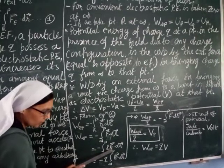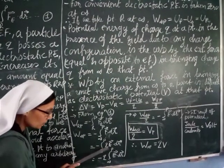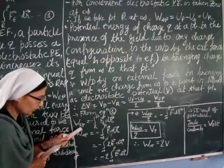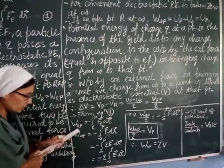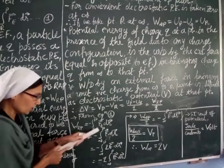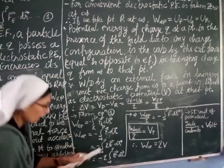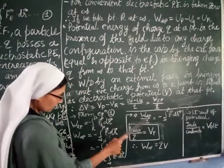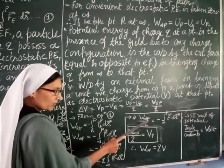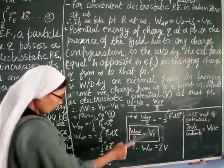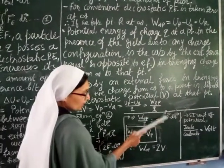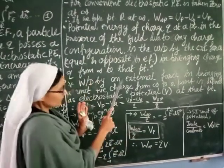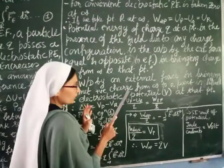Taking R as infinity for convenience, and transferring Q to the other side: the work done in bringing Q from infinity to P, divided by Q, equals −∫(infinity to P) E · dR. This ratio — work done divided by Q — from this definition is called the potential.